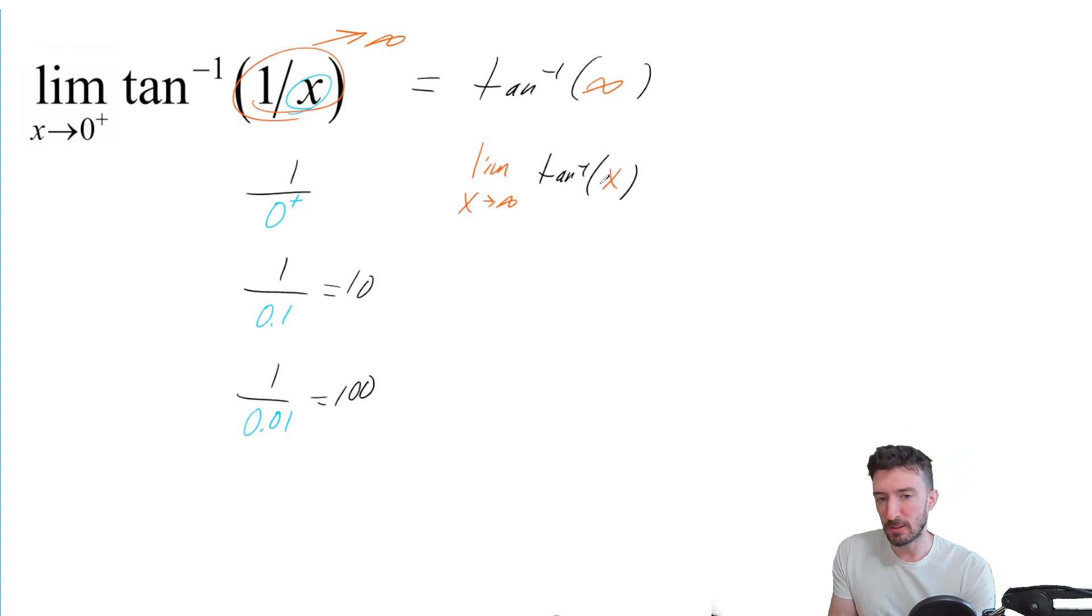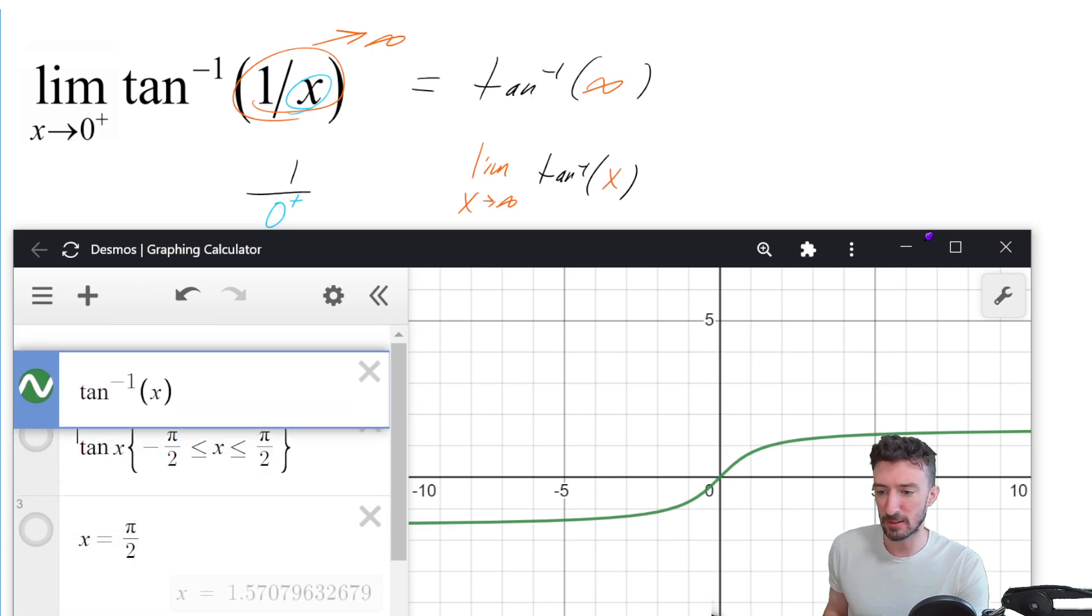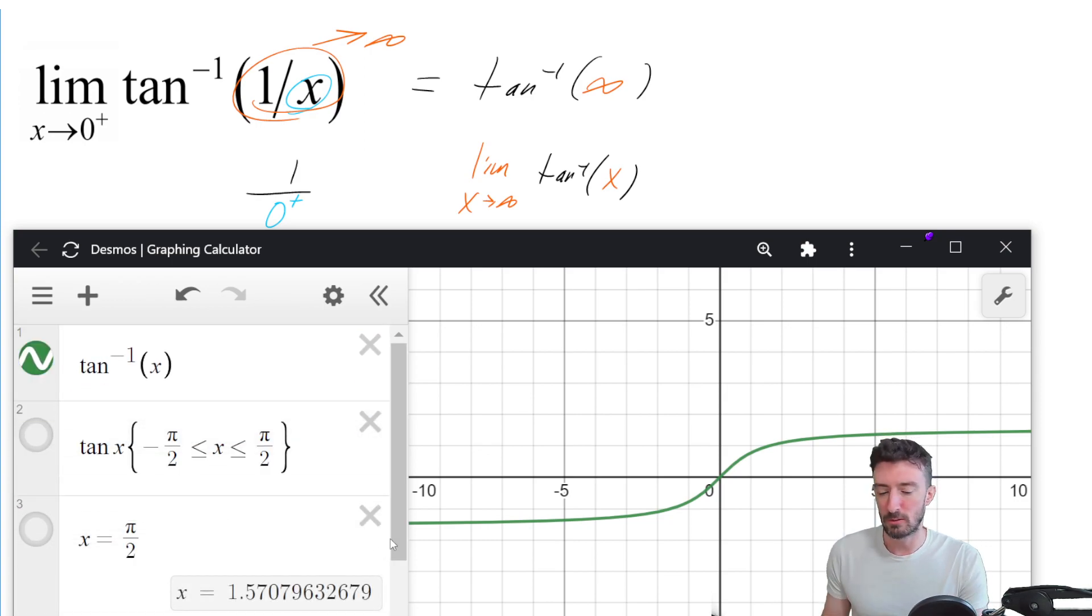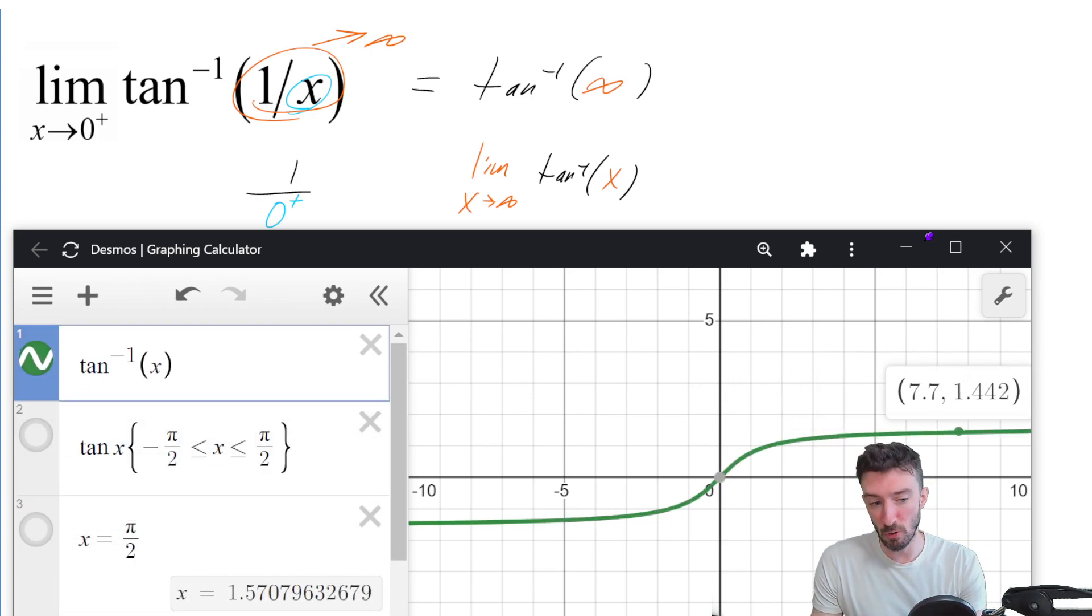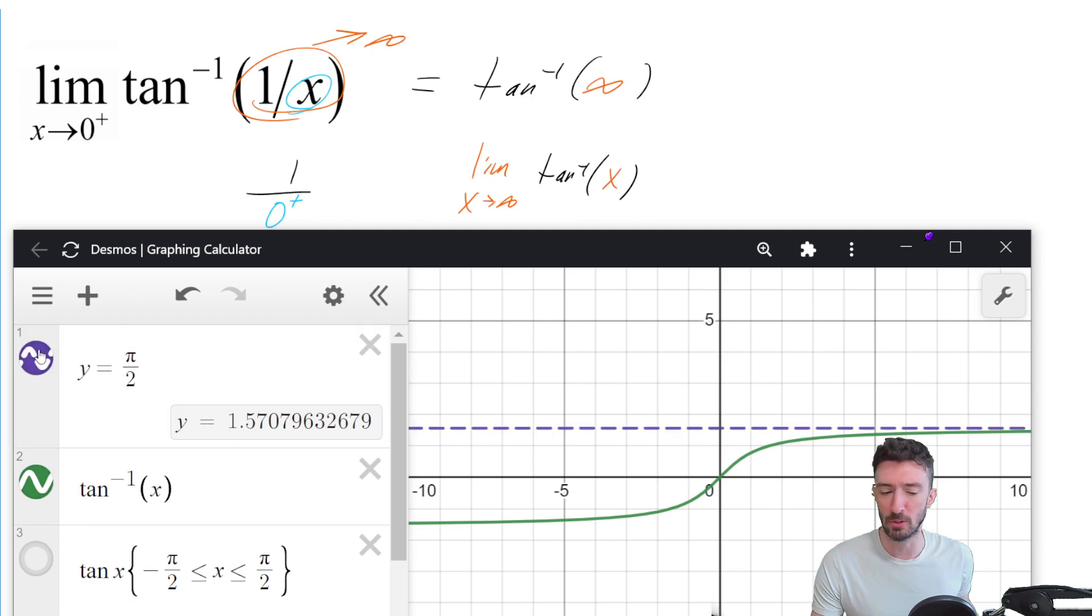So that means I'm going to be able to look at the graph of tan inverse x. Now, the short answer here is that if you just turn on the graph of tan inverse x, then you're going to see that as you go further and further to the right, that you're going to get closer and closer to an asymptote of pi over two. So that's the answer. The answer is pi over two.